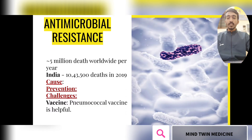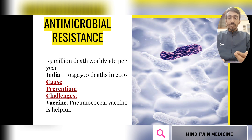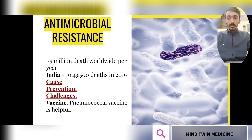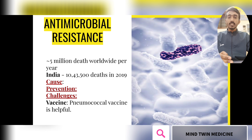Next we have antimicrobial resistance (AMR). AMR means a person will not experience any effect of the drug on their body or microbes because they have already taken the medication and are resistant — the microbe has already mutated and is resisting the drug. Worldwide, more than 5 million deaths per year are attributed to AMR, and in India, 10 lakh 43,500 deaths were because of antimicrobial resistance in 2019.